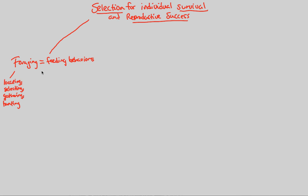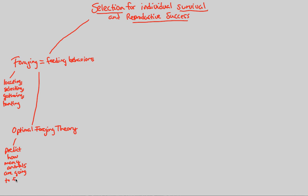An important concept to understand about foraging is the optimal foraging theory — a useful way of understanding foraging's relationship to natural selection and evolution. Optimal foraging theory tries to predict how many animals are going to forage, meaning how many will go out of their way, out of their comfort zone, to locate, select, gather, and hunt for food, knowing that this comes with certain costs and benefits.